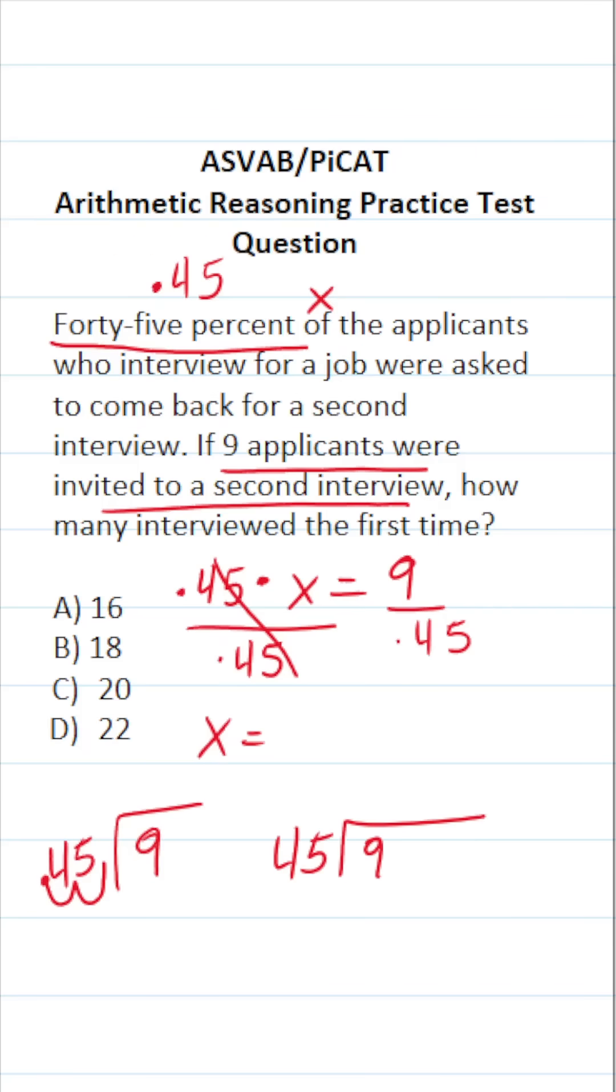At the same time, we have to take the decimal in nine, which is right here, and move it a corresponding number of times to the right. That is one, two times to the right and add zero placeholders. So this becomes 900 divided by 45.